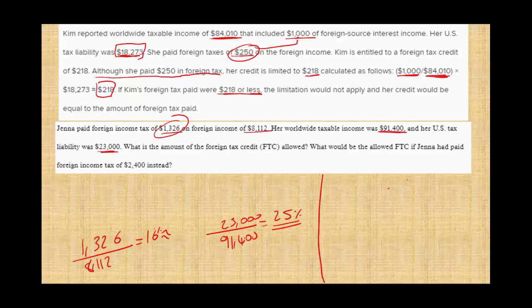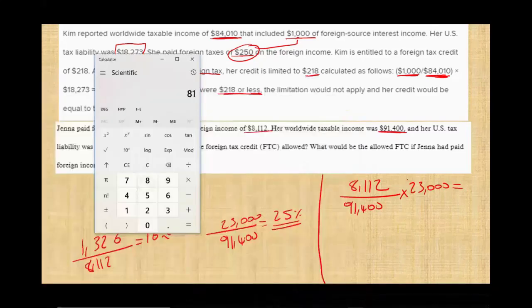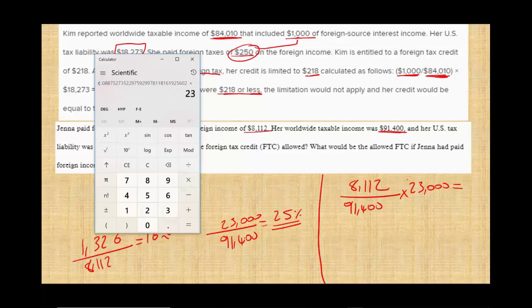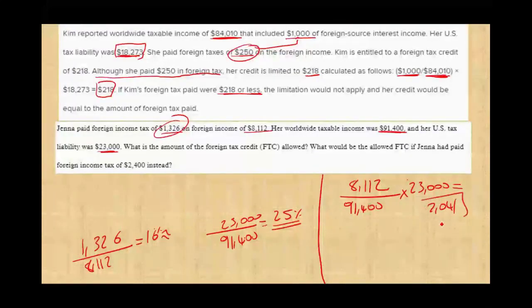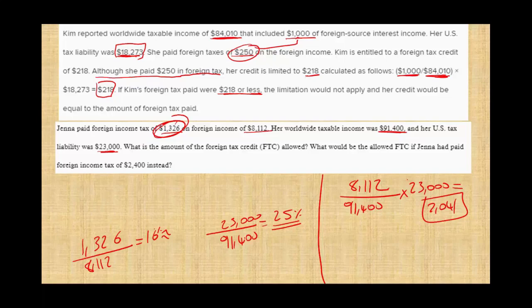Let's compute the formula. We take her foreign source taxable income of $8,112, divide it by worldwide taxable income of $91,400, and multiply by U.S. taxes of $23,000. Her foreign income represents approximately 8.8% of her income, so $8,112 divided by $91,400 multiplied by $23,000 equals $2,041. But can we give her a credit of $2,041? No — she only paid $1,326. So she gets the full credit of $1,326, because the credit is the lesser of $1,326 or $2,041.